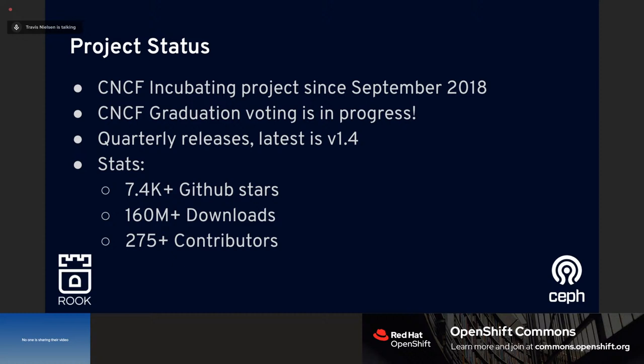We have quarterly releases - the latest is version 1.4, released in early August, with the next expected in November. The project has been growing phenomenally: over 7,000 GitHub stars, 160 million container downloads from Docker Hub, and going on 300 unique contributors to the project - a great testament to its community-driven nature.